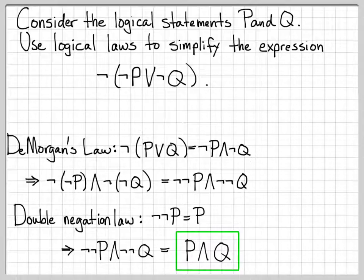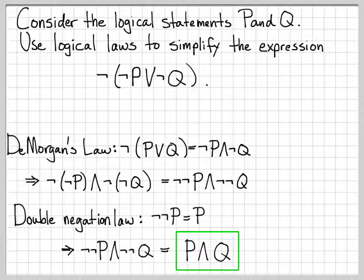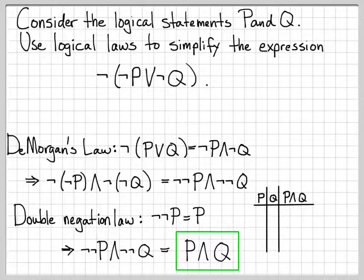That gives us P and Q, which is a much simpler logical expression compared to what we started with. One thing that's nice about problems like this is that it's very easy to check your answer. One easy way is to construct a truth table for both the original expression and the simplified expression — the truth tables should match if the simplification is valid. Let's go ahead and make a truth table for the logical expression P and Q.